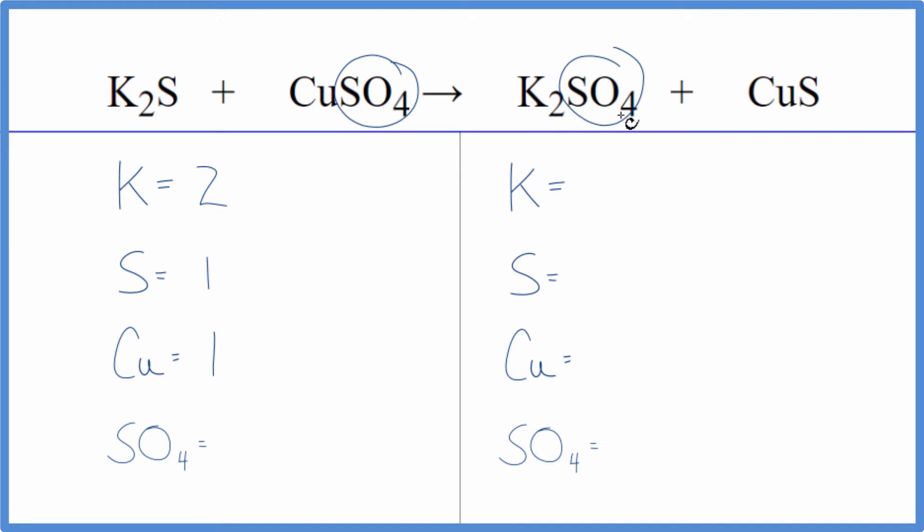So this is a nice trick you can use with any equation where you have these polyatomic ions that stay together and are on both sides. We just count it as one thing. So we have one of these sulfate ions. This will save you a lot of time, and you can use it on all kinds of double displacement reactions where we have these polyatomic ions.